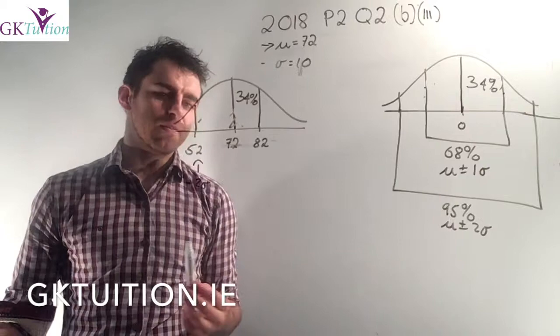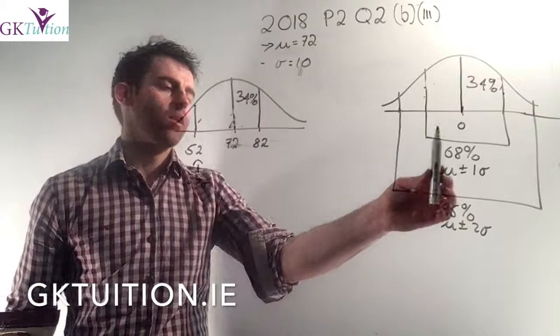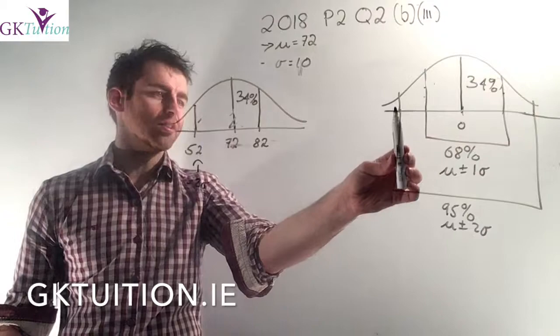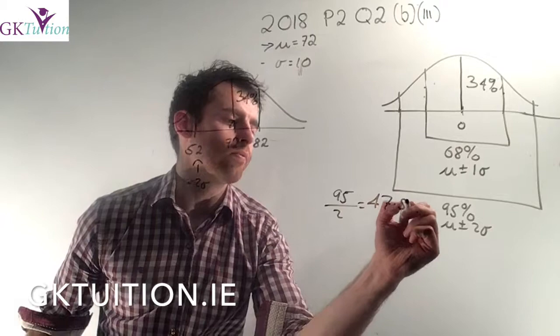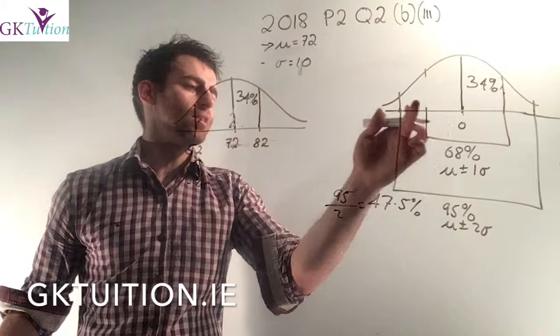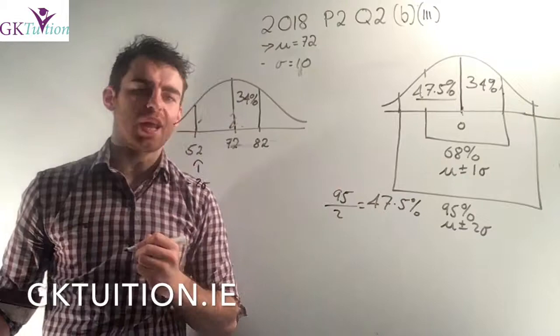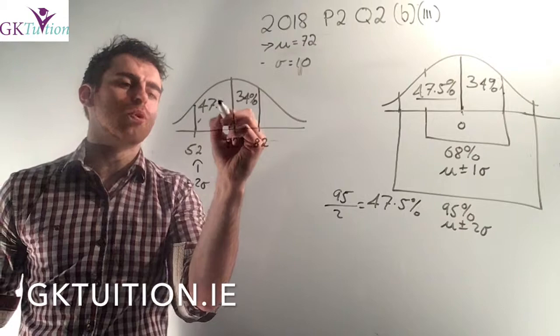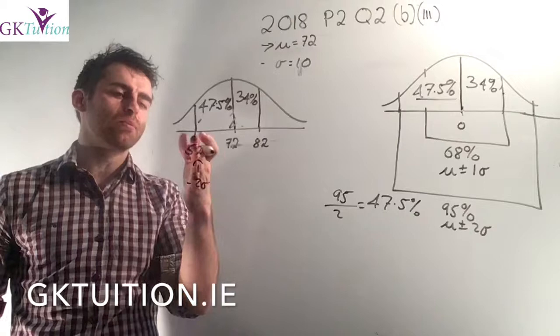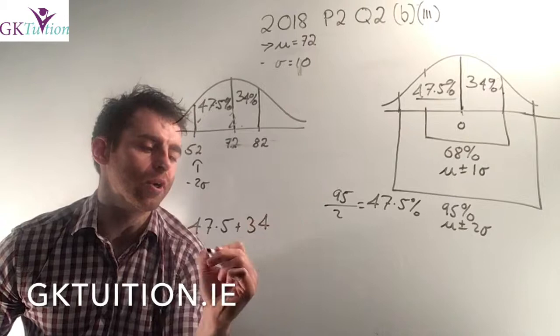Using the second part of the empirical rule: 95% of the data lie within two standard deviations of the mean. Taking half of that, 47.5% of the data lies between the mean and two standard deviations below the mean. Since two standard deviations below 72 is 52, that means 47.5% of students scored between 52 and 72. So the percentage of students who scored between 52 and 82 is 47.5 + 34.